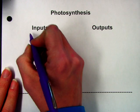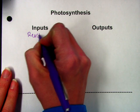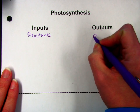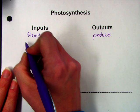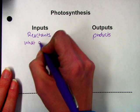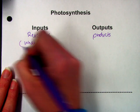Inputs can also be called reactants. Outputs can also be called products. This is basically what goes in to a reaction. This is what comes out.